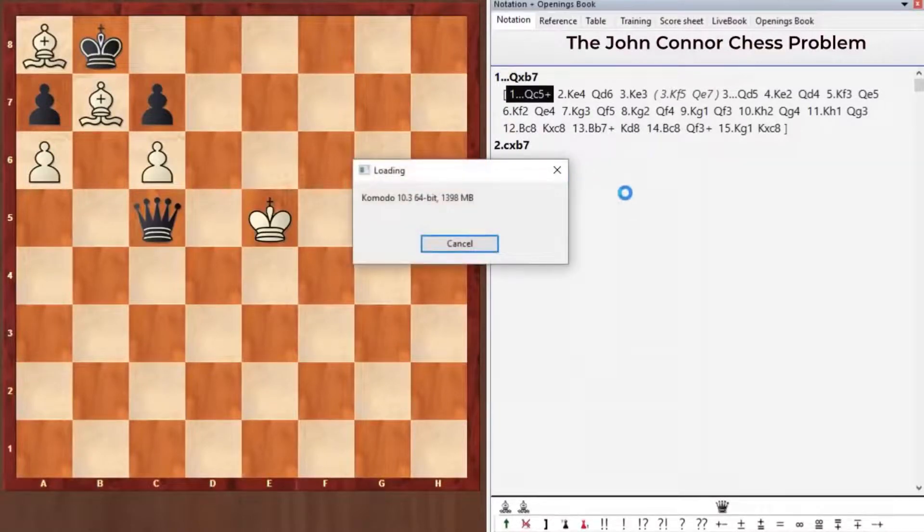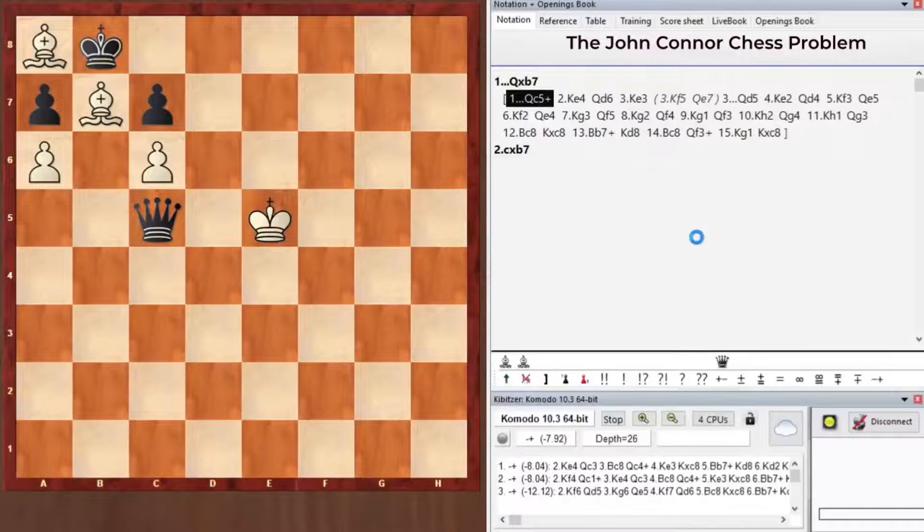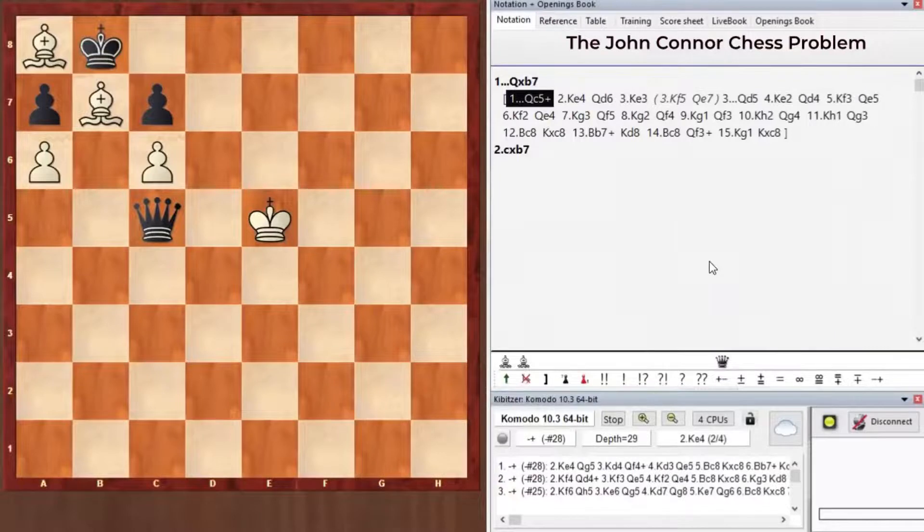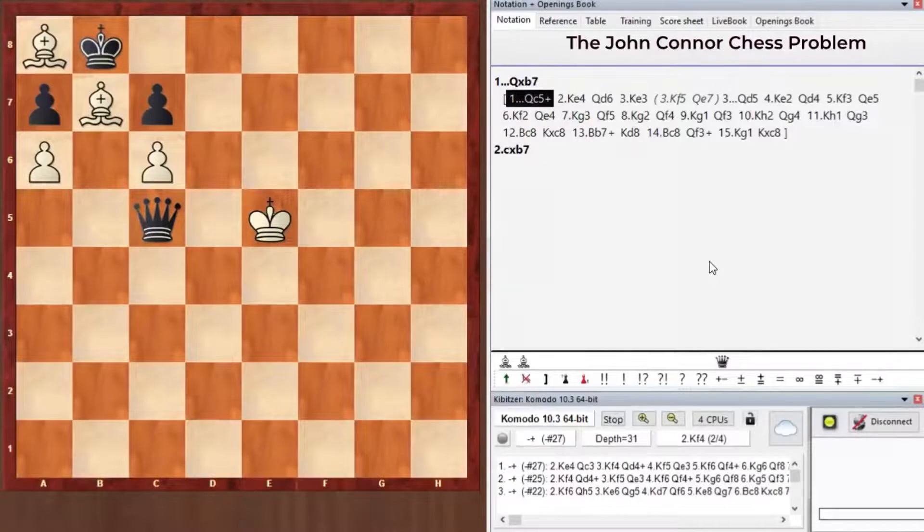But after I've introduced all that, let's see if our engine finds a solution now. Let's check Komodo again. Yeah, it finds checkmate in 28 moves, friends. So after I showed the computer how to solve the problem, it figured it out and found the solution. And now in the initial position, it finds mate in 21 moves.